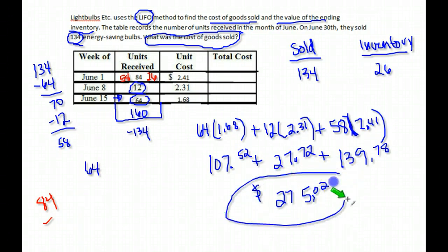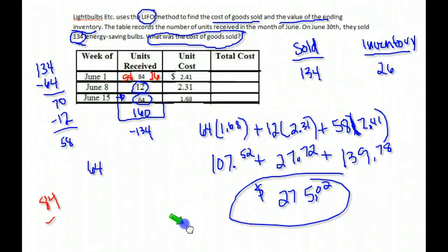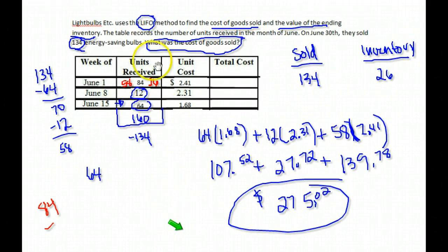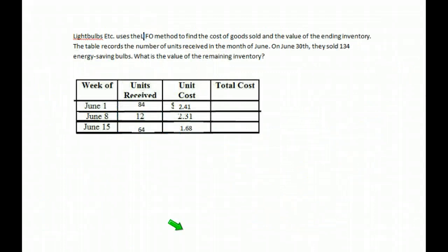Now, if you remember our answer from using the First In, First Out method, this is a different answer. But it's because we're using that other method for selling inventory. We're selling the last ones first and the first ones last. So that will make a difference in your answer.